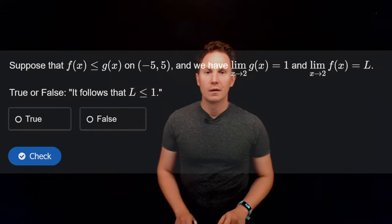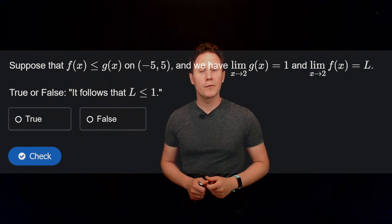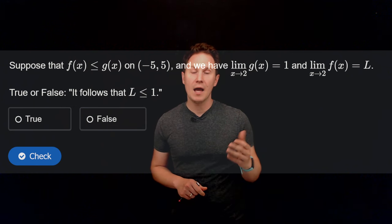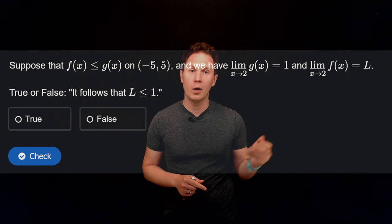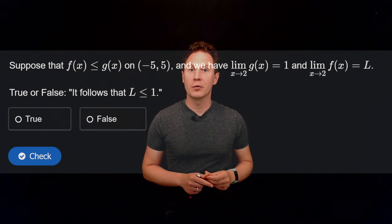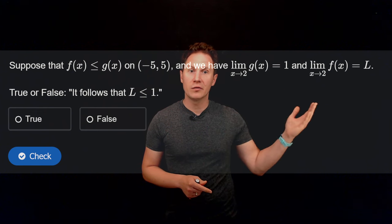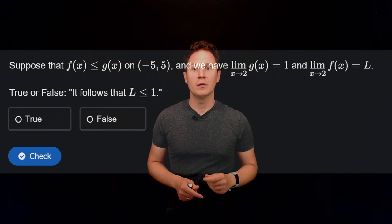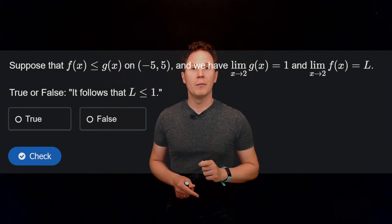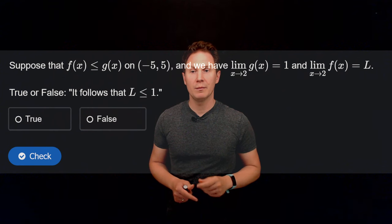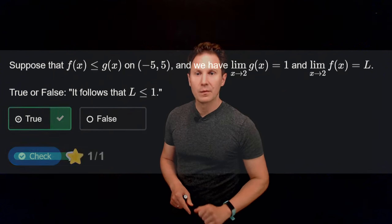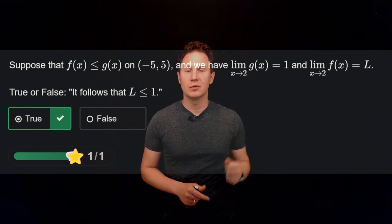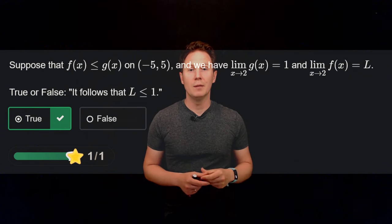Here is the first question. Suppose that f(x) is less than or equal to g(x) on the open interval between negative 5 and 5, and we have that the limit as x approaches 2 of g(x) equals 1, and the limit as x approaches 2 of f(x) equals l — we know it exists but don't know its precise value. Is it true or false that from this information it follows that l must be less than or equal to 1? This is indeed true — it's a simple matter of applying the last result about comparing limits.